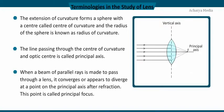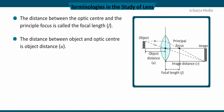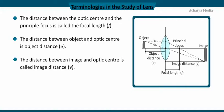When a beam of parallel rays is made to pass through a lens, it converges or appears to diverge at a point on the principal axis after refraction. This point is called the principal focus. The distance between the optic center and the principal focus is called the focal length, F. The distance between the object and optic center is the object distance, U. The distance between the image and optic center is called the image distance, V.